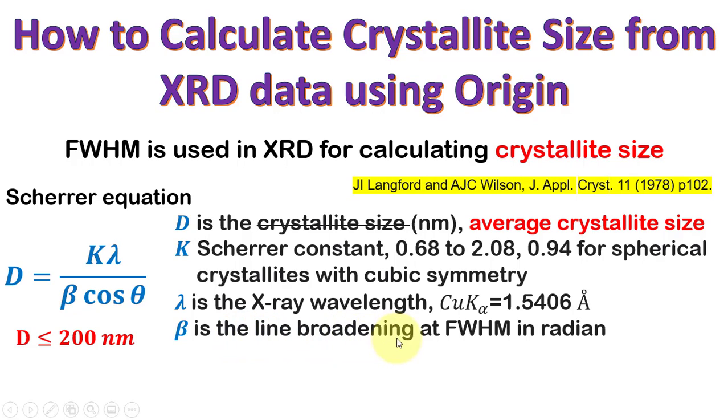Beta is the line broadening at FWHM and we must use this value in radians. Origin will give this value in degrees and we will have to convert it. Finally, theta is the Bragg angle in degrees, and in XRD we plot two theta values so we will take half of that value.